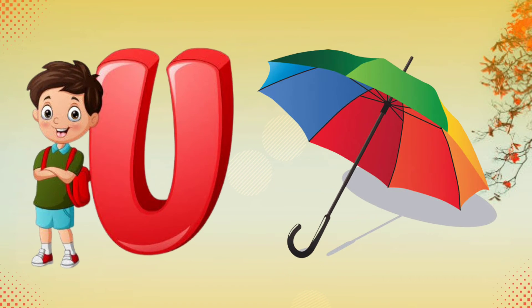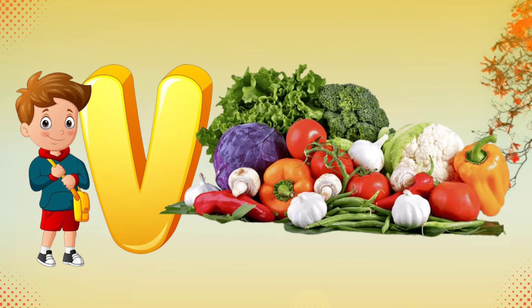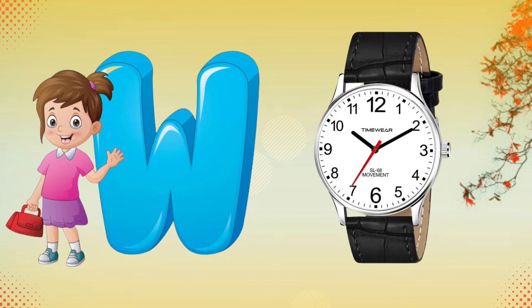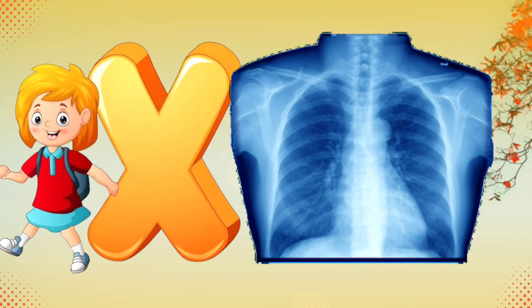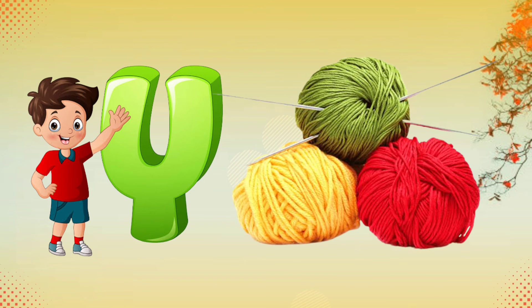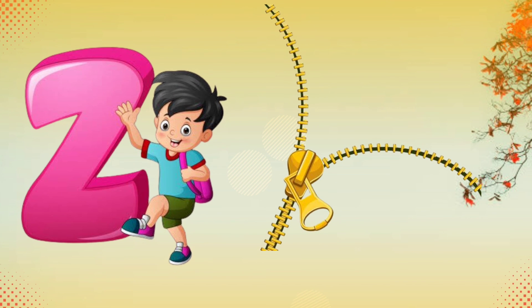U for umbrella, V for vegetable, W for watch, X for x-ray, Y for yarn, Z for jeep.